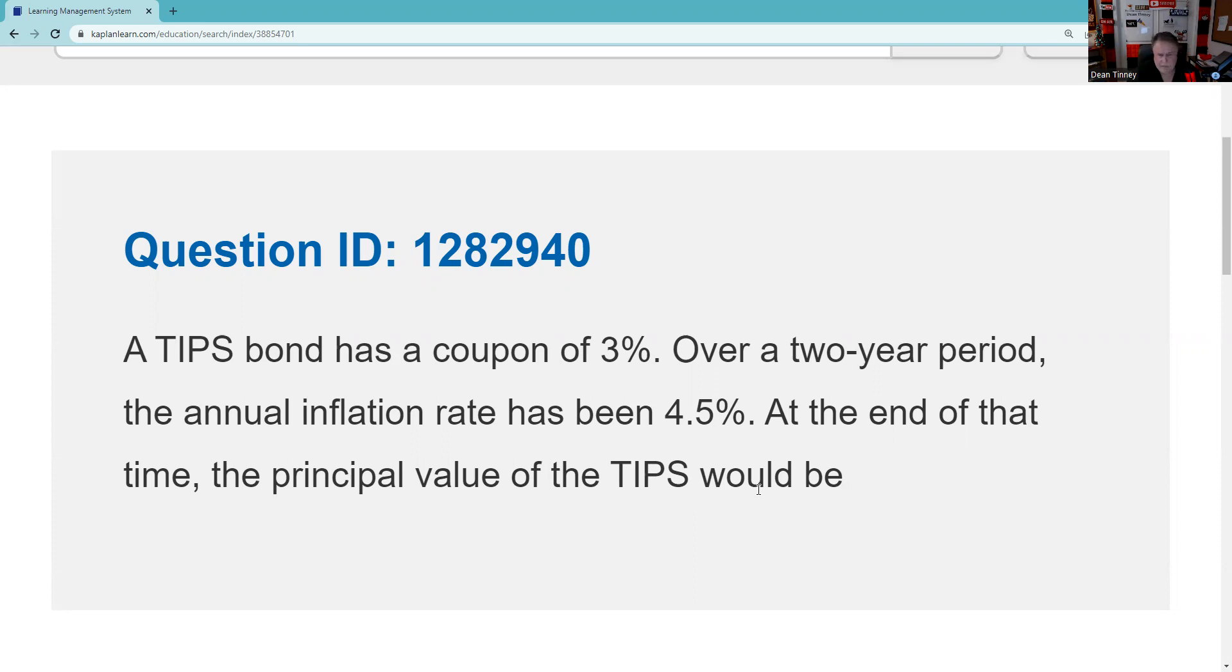A TIPS bond has a coupon of 3%. Over a two-year period, the annual inflation has been 4.5%. So the first test issue here is that 4.5% is going to be paid like a bond semi-annually. The adjustment to the principal is going to be semi-annually. So the first thing we got to do is say that's going to be 4.5%, but since it's semi-annually, what we're really talking about is half that, which is going to be 2.25% as an adjustment.